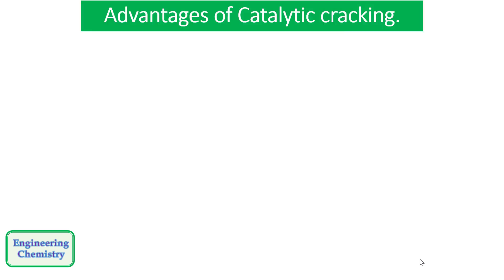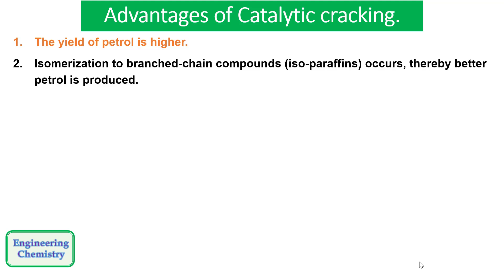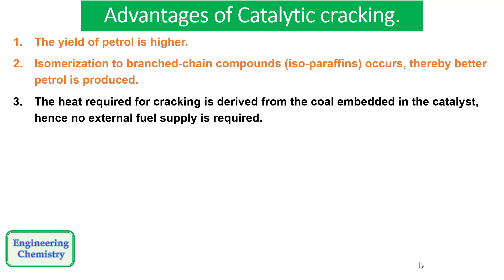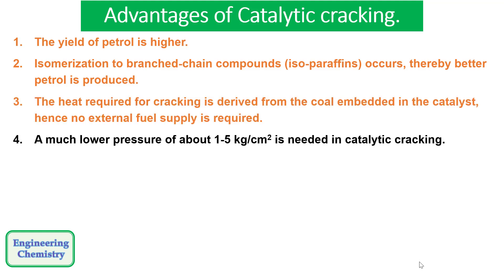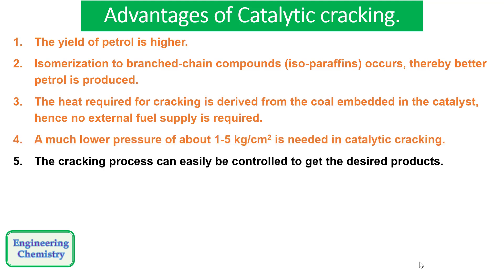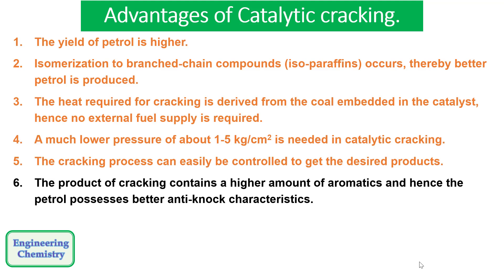The advantages of catalytic cracking are: the yield of petrol is higher; isomerization to branch-chain compounds occurs, thereby producing better quality petrol; the heat required for cracking is derived from the carbon embedded in the catalyst, so no external fuel supply is required; a much lower pressure of around 1 to 5 kg/cm² is needed; and the cracking process can easily be controlled to get desired products. For example, instead of gasoline, other specific products can be obtained. The product contains a high amount of aromatics, giving the petrol better anti-knocking characteristics.